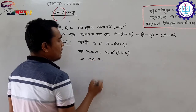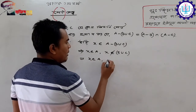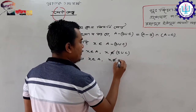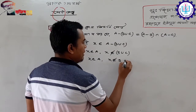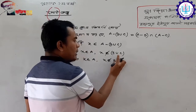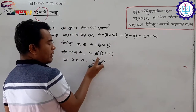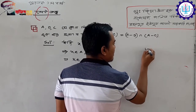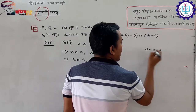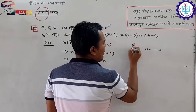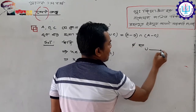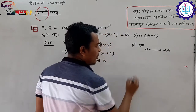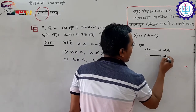x belongs to A — let us separate this part. x belongs to B; for part A, the union side, there is a not-belongs-to. We saw earlier that: if not-belongs-to holds, then union becomes intersection, and intersection becomes and/or.